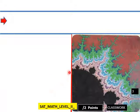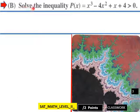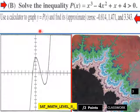Okay, let's try another one. Solve the inequality P(x) = x³ - 4x² + x + 4 > 0. So using the calculator to graph y = P(x), here it is, and find its approximate zeros. You got a zero here, you got a zero here, you got a zero there.